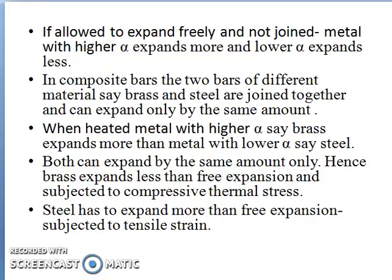Consider a composite bar with two bars of different material, say brass and steel, joined together. Since they are joined, they can only expand by the same amount. When heated, the metal with higher alpha — say brass — expands more than the metal with lower alpha — say steel. But both can expand by the same amount only. Hence, brass expands less than its free expansion and is subjected to compressive stress, whereas steel has to expand more than its free expansion and is therefore subjected to tensile stress.